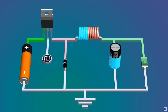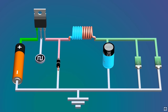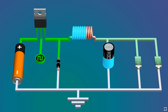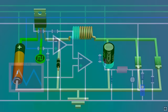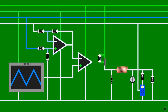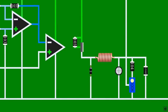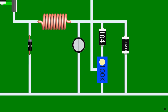We have now created the basic buck converter. However, there are some issues: as the load changes, the voltage across the load also changes. So we need to create feedback to change the duty cycle of the PWM signal with respect to the load. Also, we need to address how the PWM signal is generated.